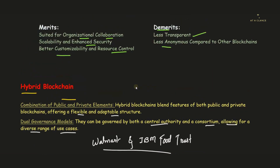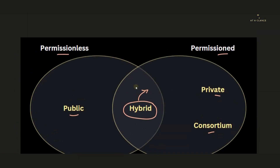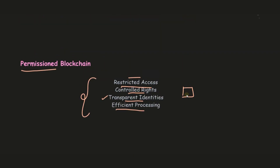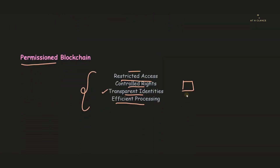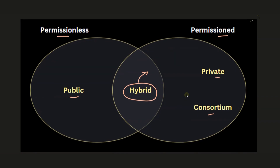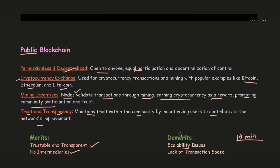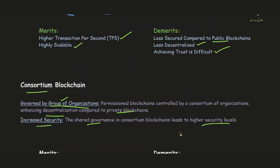This brings us to the end of the video. We have discussed permissioned and permissionless blockchain. Under permissioned blockchain we covered private and consortium blockchain. Under permissionless we covered public blockchain. We also discussed hybrid blockchain, the combination of both. I hope each type is clear. If you have any doubts, put them in the comment section. Do like, share, and subscribe, hit the bell icon, and follow me on Instagram and Telegram. Thanks for watching, have a good day.